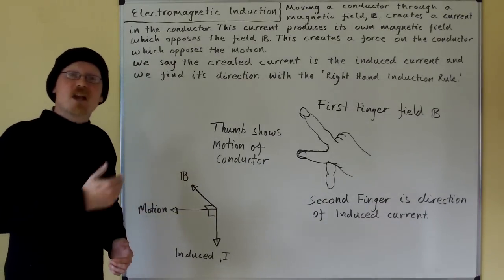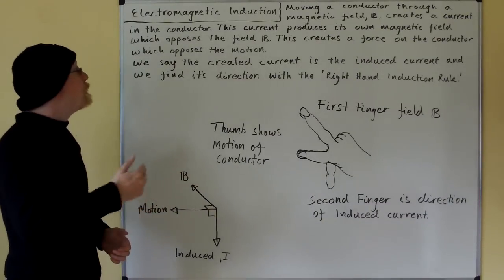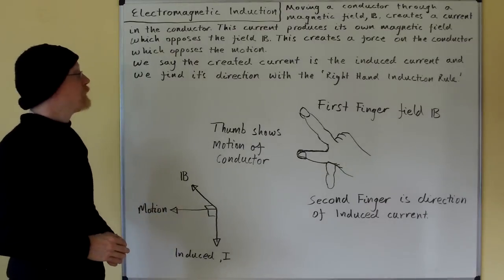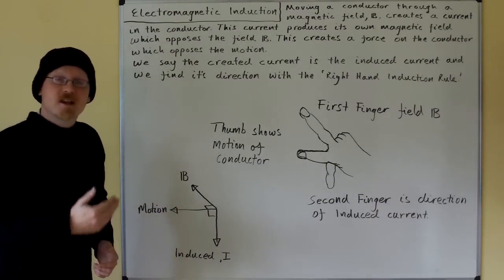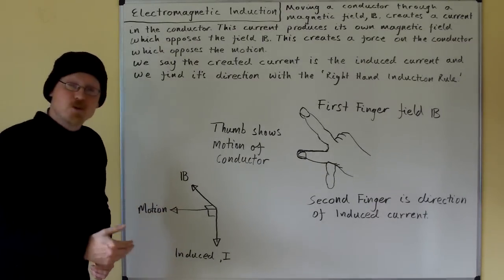This current produces its own magnetic field which opposes the field B. This creates a force on the conductor which opposes the motion.